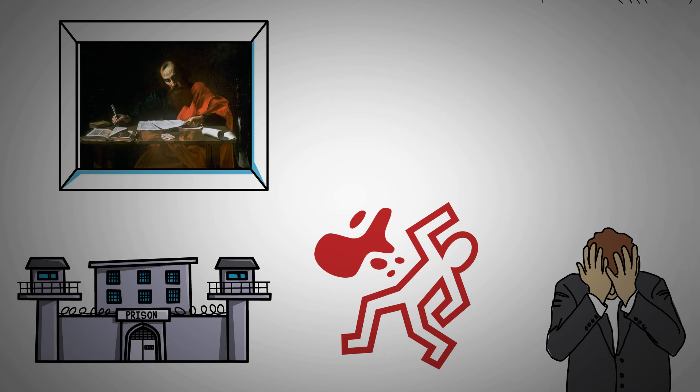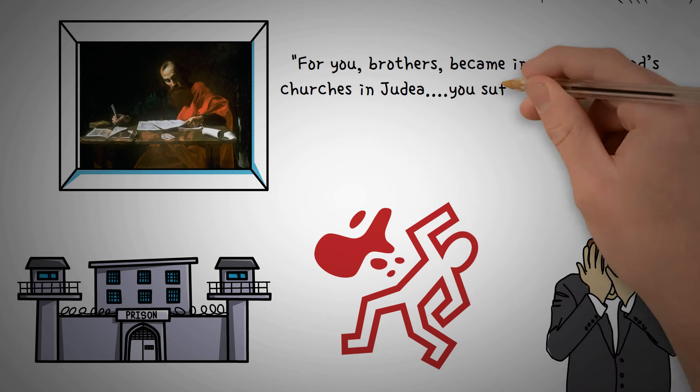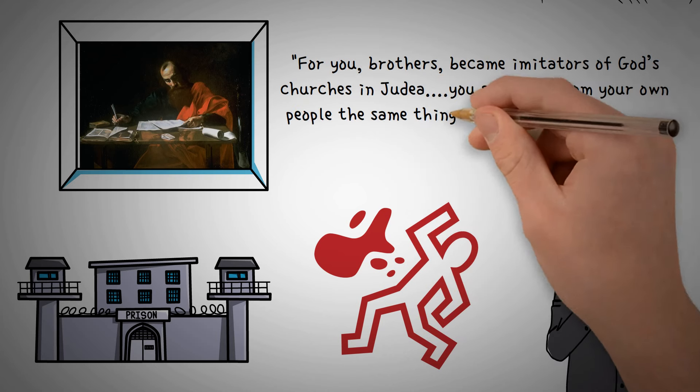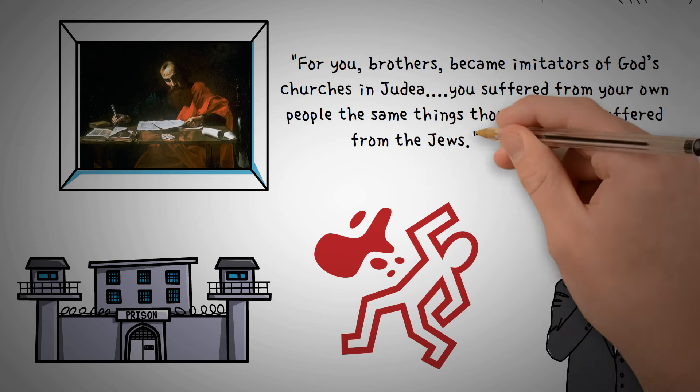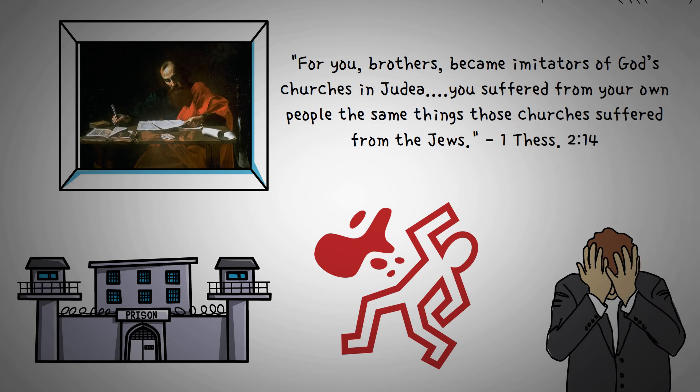In various ways, he tells them to keep the faith in the face of persecution. He writes in 1 Thessalonians 2:14, 'For you brothers became imitators of God's churches in Judea, which are in Christ Jesus. You suffered from your own people the same things that those churches suffered from the Jews.' This shows that the young church was being persecuted by both Jew and Gentile.